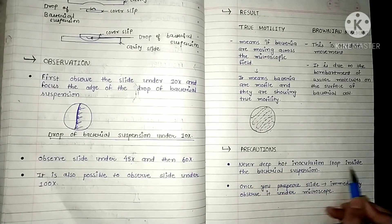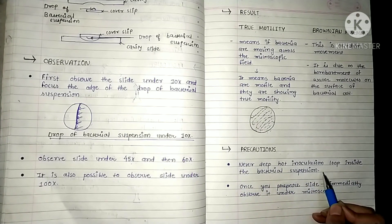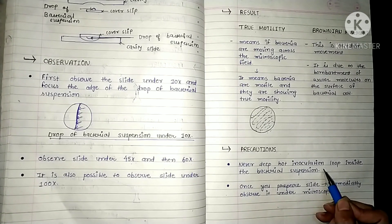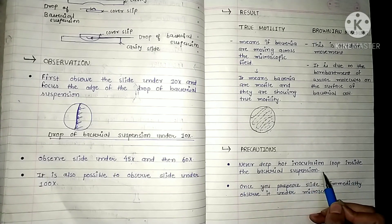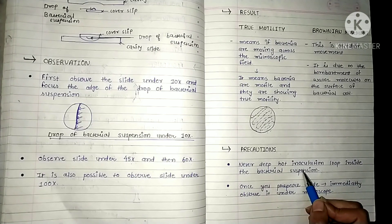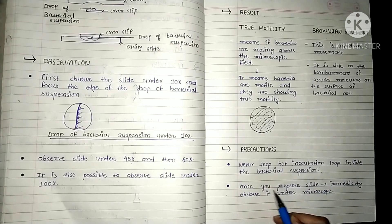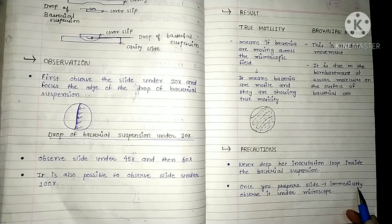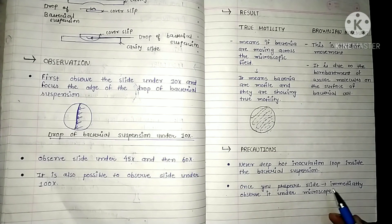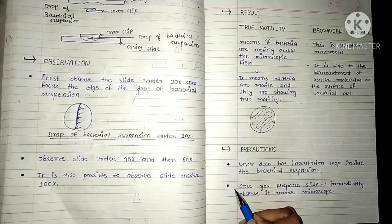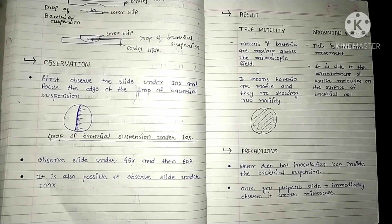Regarding precautions: never dip a hot inoculation loop into the bacterial suspension, as the bacteria will die and you may not get a result. Additionally, once you prepare the slide, observe it under the microscope immediately, because if you leave the slide for a few minutes the drop of bacterial suspension will dry out. These two precautions are very important.